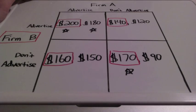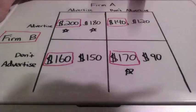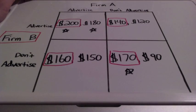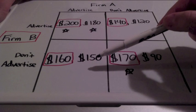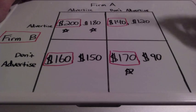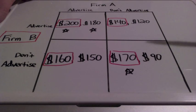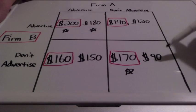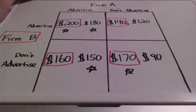When firm B does not advertise, we're looking at these two boxes here. Will firm A advertise and make $150 in profits, or will firm A choose not to advertise and make $90 in profits? Well, $150 is greater than $90, so firm A is going to advertise.